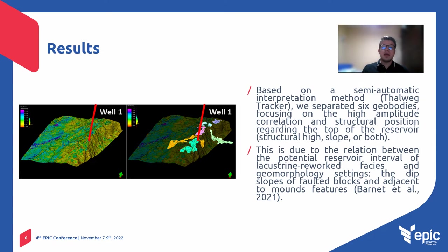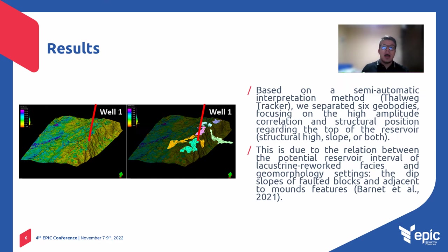Based on a semi-automatic interpretation method, we separated six geobodies, focusing on the high amplitude correlation and the structural position regarding the top of the reservoir — on the structural height, on the slope, or both. This is because the relation between the potential reservoir interval of these lacustrine reworked facies and the geomorphology setting can be influenced. For that reason, the dipping slopes of the faulted blocks and the features adjacent to the mouth are potentially areas to characterize.